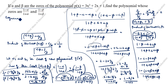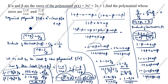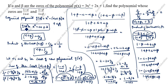The required polynomial is q(x) = x² - (alpha₁ + beta₁)x + alpha₁·beta₁ = x² - 2x + 3. This is the answer. Thanks for watching this video.